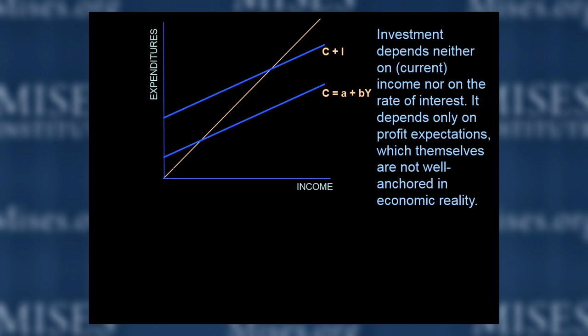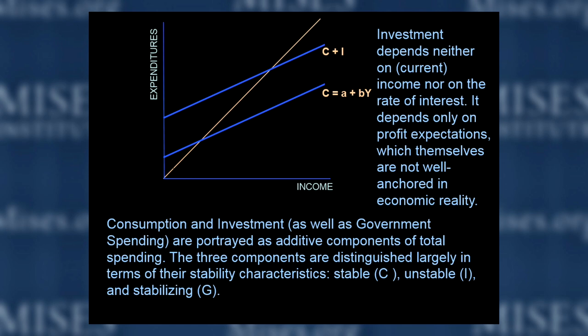Investment is measured by the distance between consumption and C plus I, and it can change a lot — that's the monkey in the story. Consumption, investment, and government spending are portrayed as additive components of total spending, distinguished largely by their stability characteristics: consumption is stable, investment is unstable, and government spending is supposedly stabilizing.